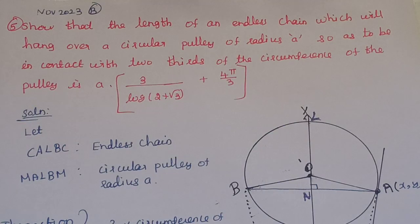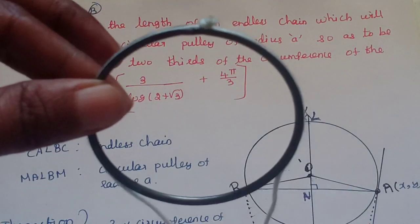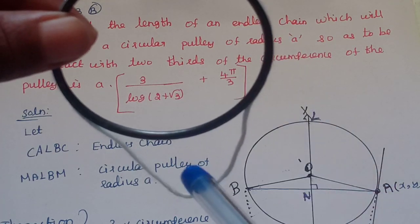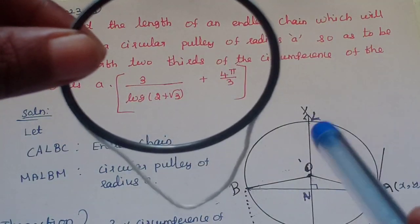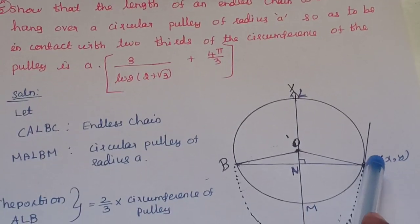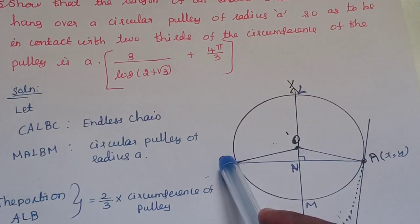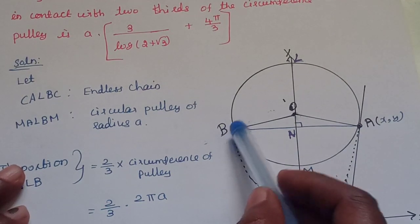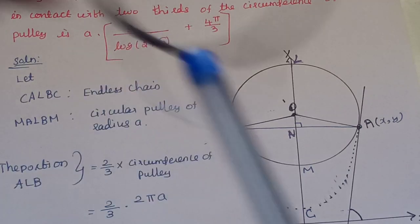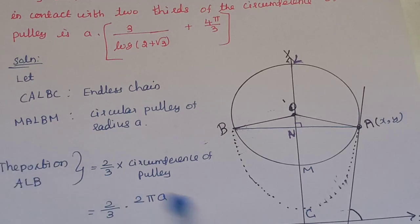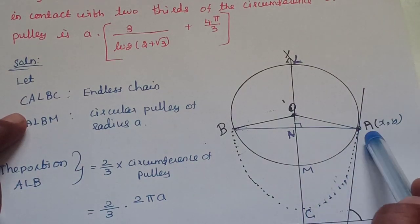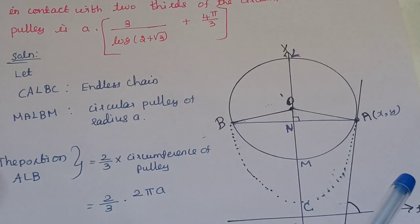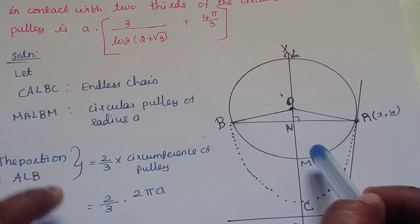This is the circular portion with radius A. This is the endless chain. We take a tangent here. The chain has points A and B on the pulley, and a hanging portion. A is above the circular section. The portion ALB is on the circular pulley, and ACB is the free-hanging portion. This is a circular pulley (bully).